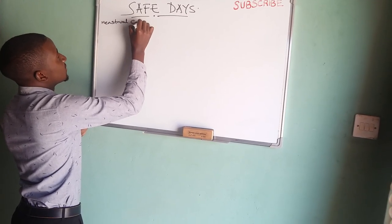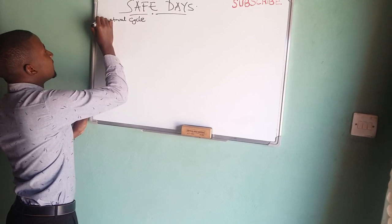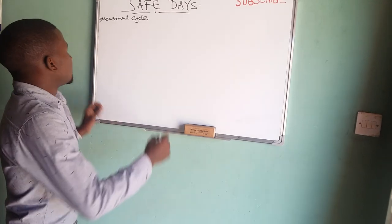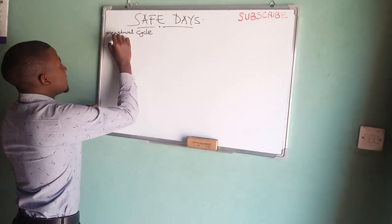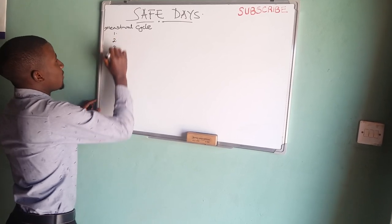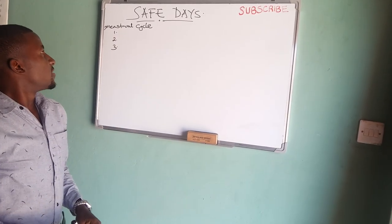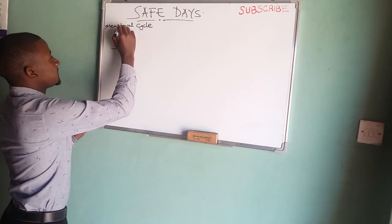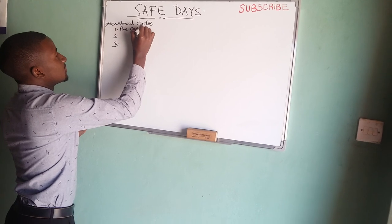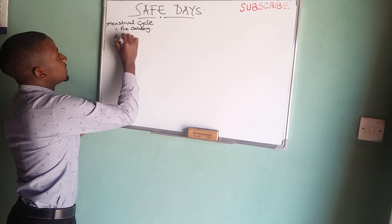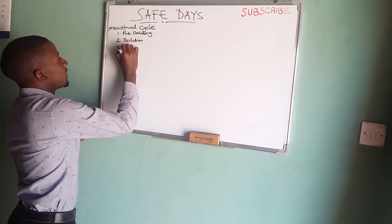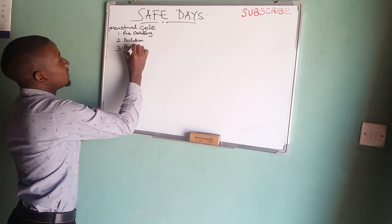We will first talk about the menstrual cycle. Why do you need to know about the menstrual cycle? We have basically three stages: the pre-ovulatory, then ovulation itself, and the post-ovulation.